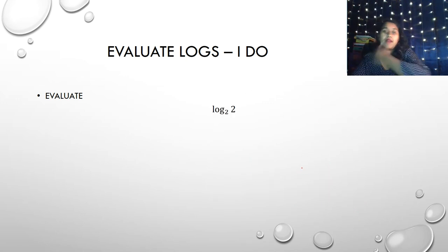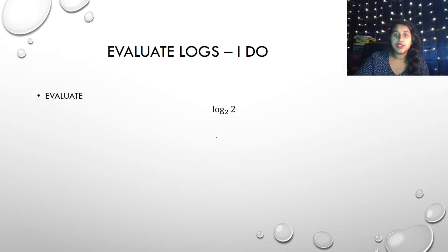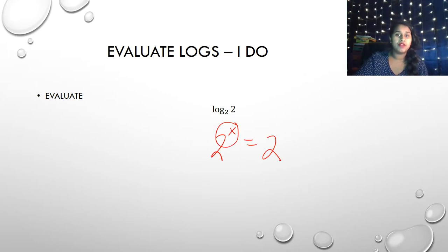For the final example: 2 to some power equals 2. Anything to the first power is equal to itself. Therefore, x must equal 1.